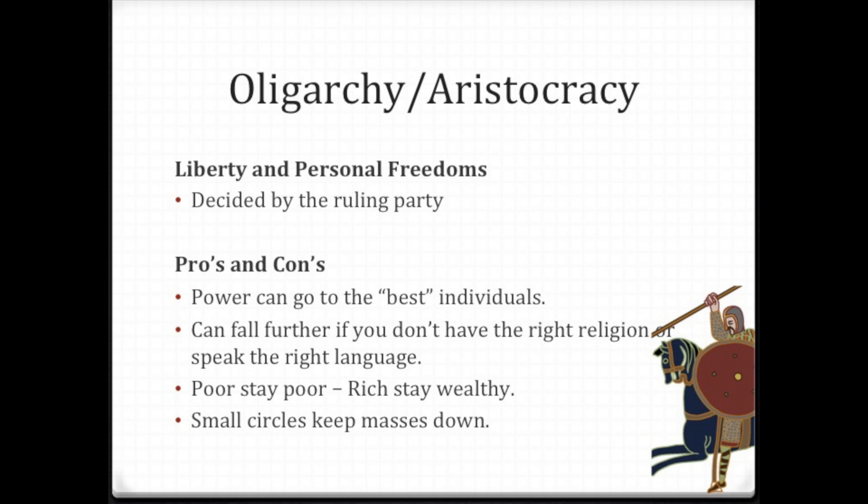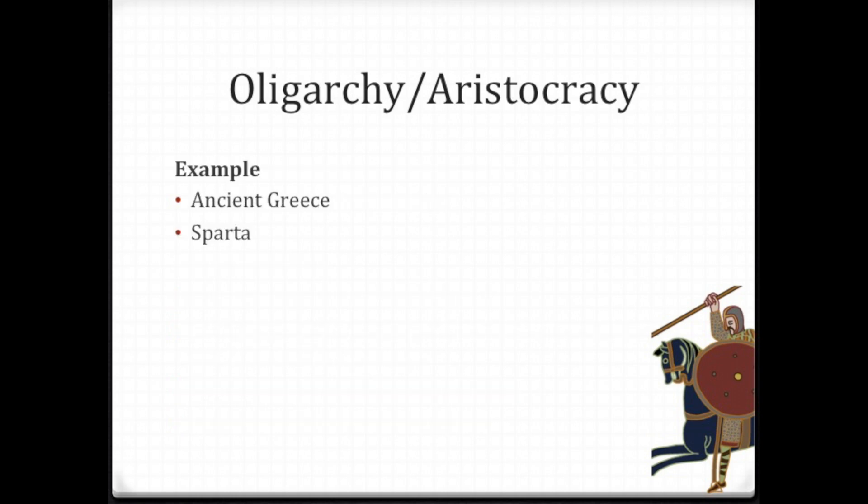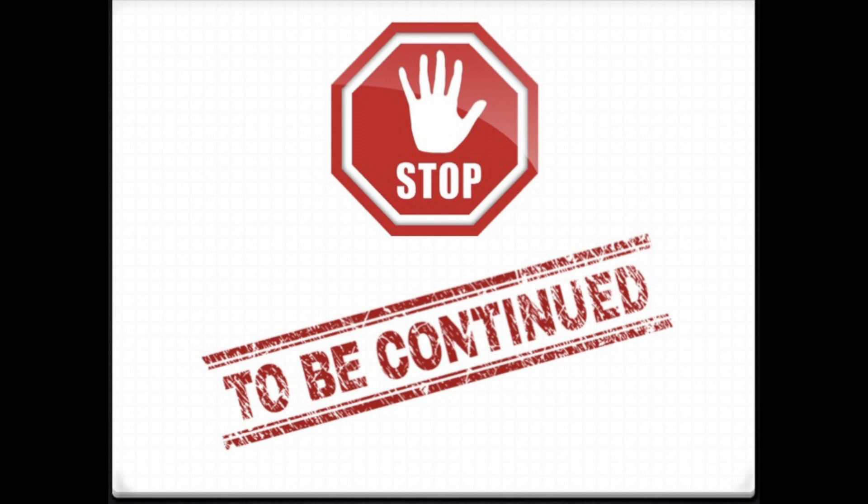One issue with oppression and public obedience is that the ruling group can't easily go to war, because they're afraid that if they give weapons to the masses, the people will revolt. So everything is tightly controlled in an oligarchy and aristocracy. Other than South Africa up until 1994, examples include ancient Greece and Sparta. We'll stop for today and finish part two of this series tomorrow.